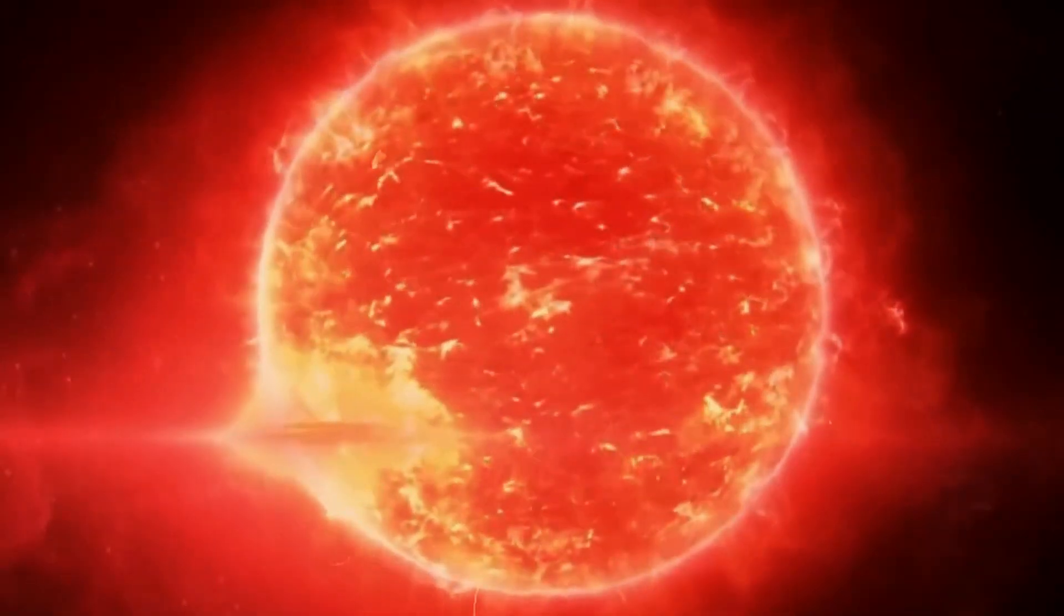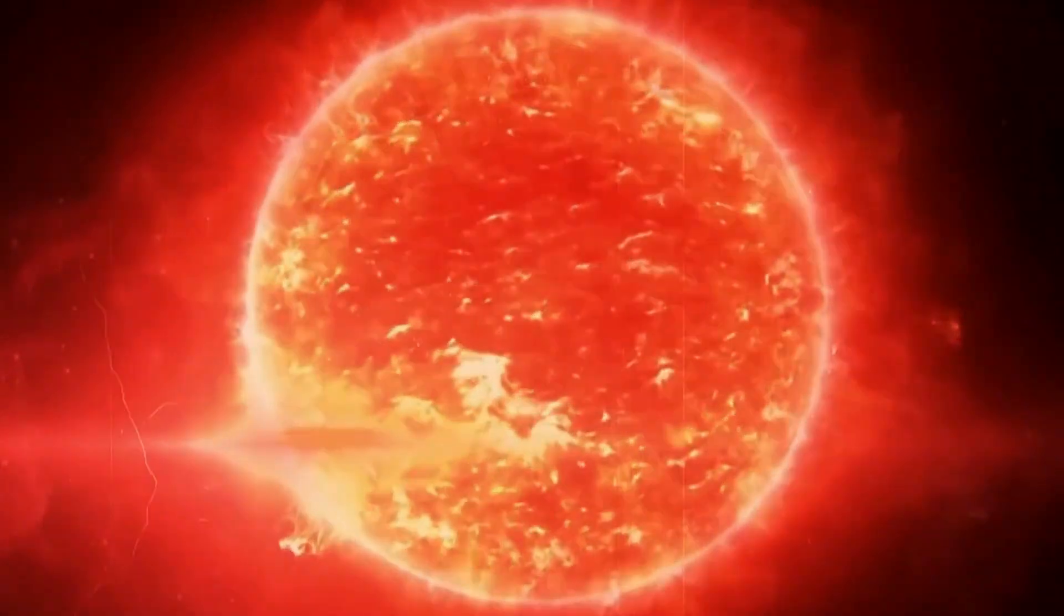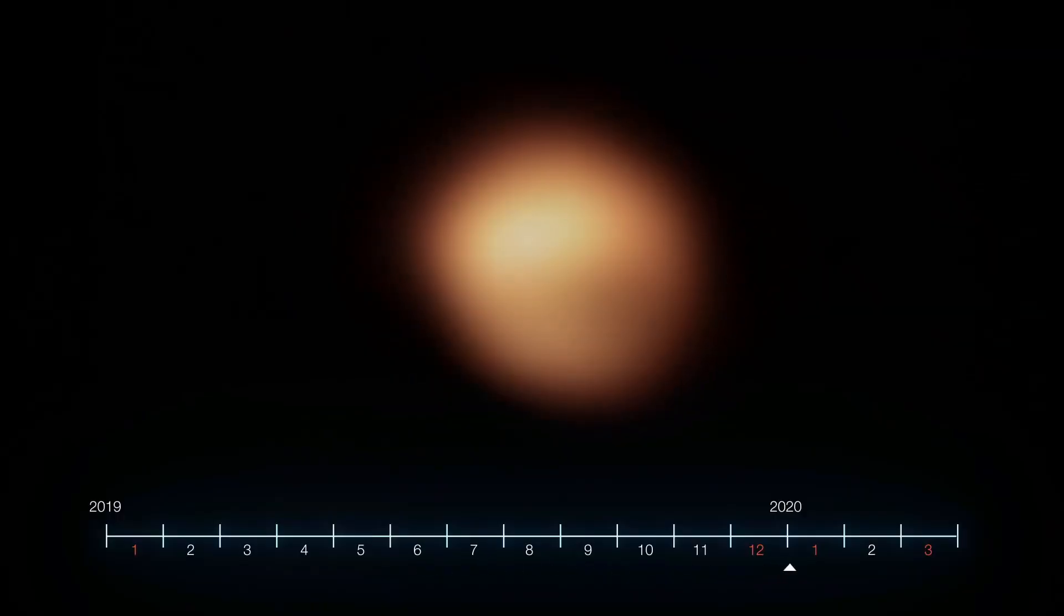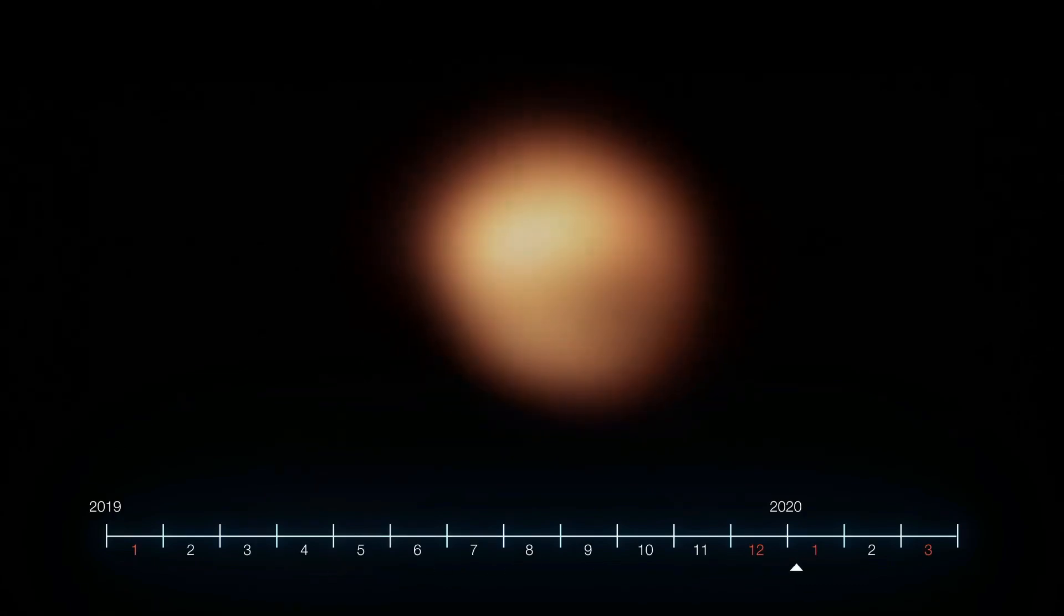Betelgeuse, a red supergiant, has been fluctuating in brightness with periodic dimming and changes in its appearance that suggest it is nearing the end of its life.